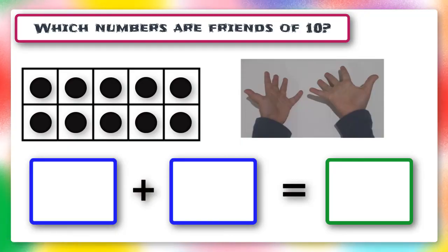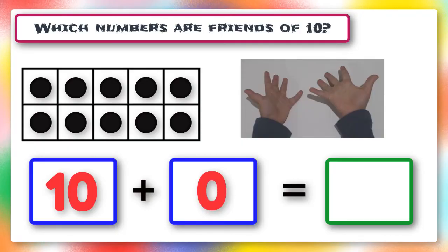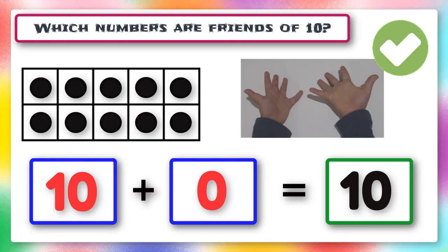10 and what are friends of 10? 10 and zero are friends of 10. You did great.